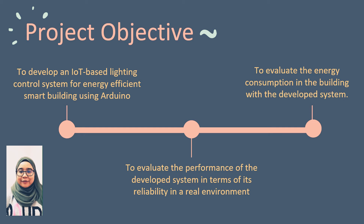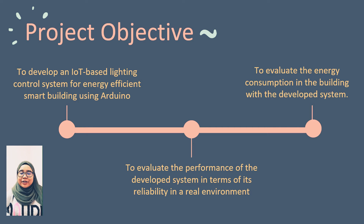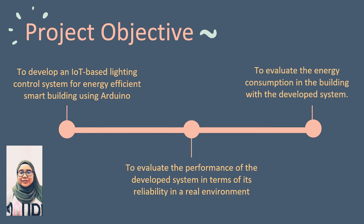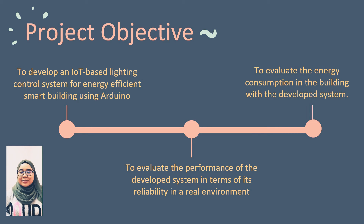For the project objectives, the main aim of this project is to build a light control system targeted for energy efficiency. Specifically, the first objective is to develop an IoT-based light control system for an energy-efficient smart building using Arduino. The second is to evaluate the performance of the developed system in terms of its reliability in the environment. The last objective is to evaluate the energy consumption in the building with the developed system.